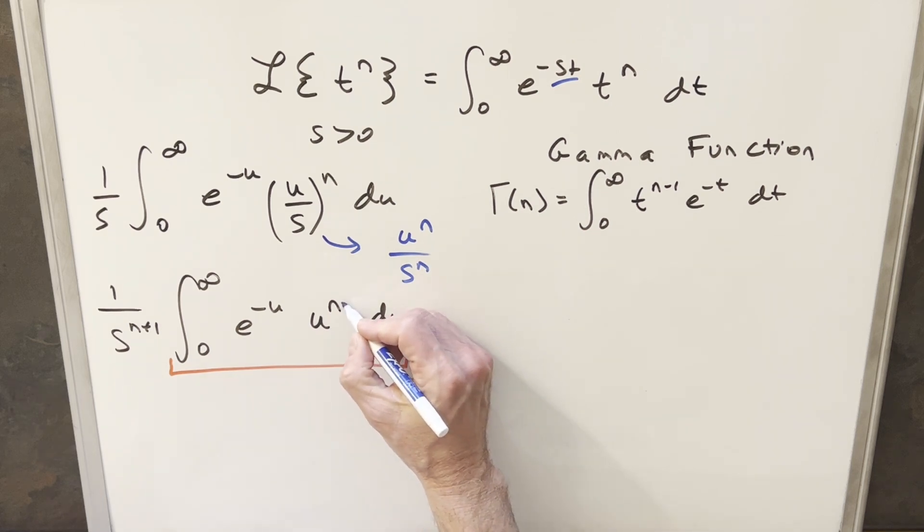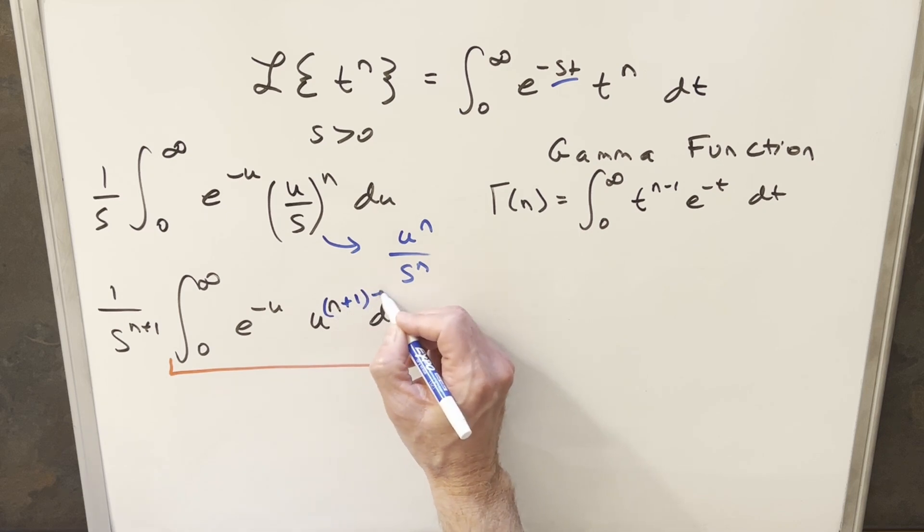Now we have our formula for the gamma function over here to the right. You notice we have the same exact bounds. The integral is in u, even though this formula we have in t, but the variable doesn't really matter. The only difference really here is the exponent on our u. Here we have n, and here we have n minus 1. Well, I can clean that up pretty easily. If I write this as n plus 1, n minus 1, now we haven't changed it, but now we're in this form.